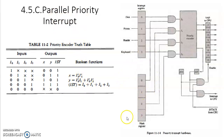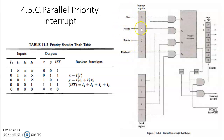In parallel priority interrupt, two types of registers are used: one is the interrupt register and another is the mask register. The interrupt register receives interrupt requests from various input-output devices — such as magnetic disk, printer, barcode reader, keyboard. All IO devices send interrupt requests to this register and those requests are stored there. Here, device 0 has the highest priority and device 3 has the lowest priority.